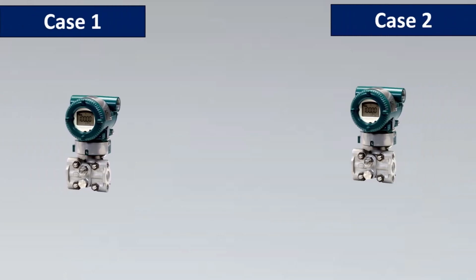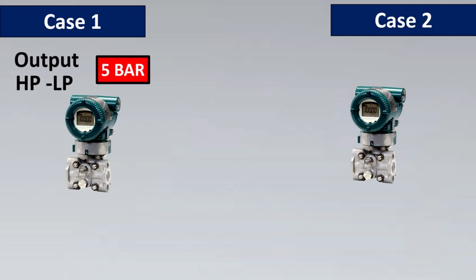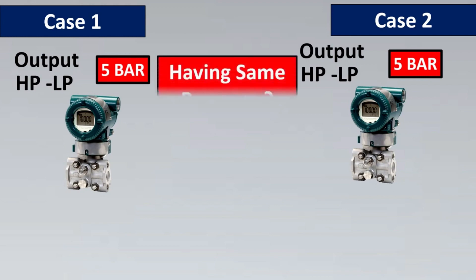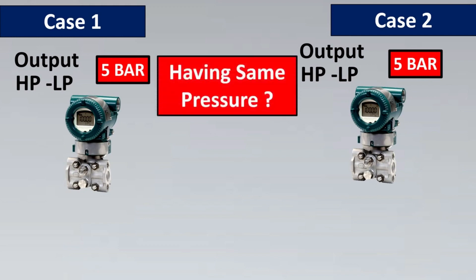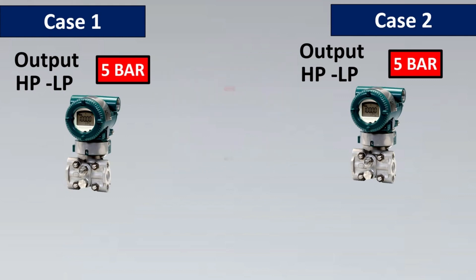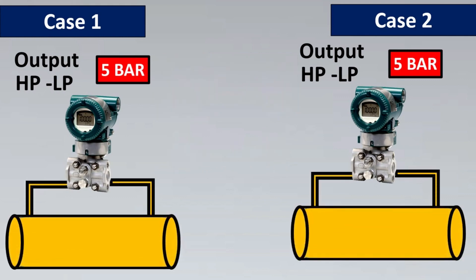Imagine that we have two DP transmitters. The first transmitter has an output of 5 bar, which is the HP minus LP, and the second transmitter also has 5 bar as the output, HP minus LP. So are these both experiencing the same pressure? The answer is no — they are not experiencing the same pressure. Let's look into a practical case.